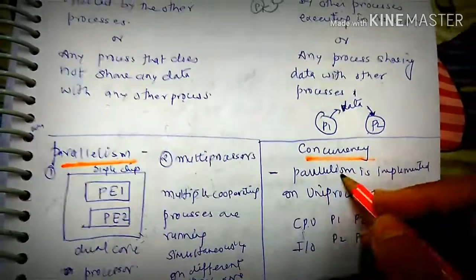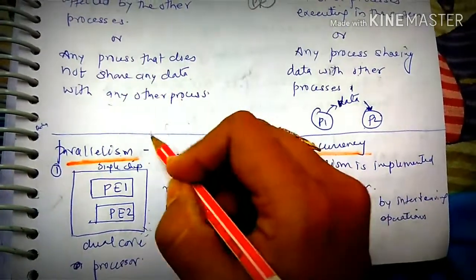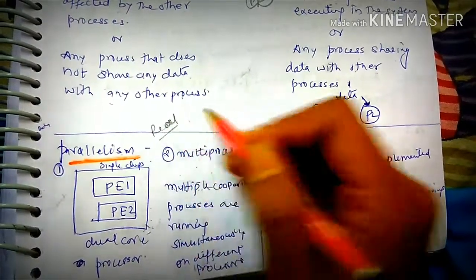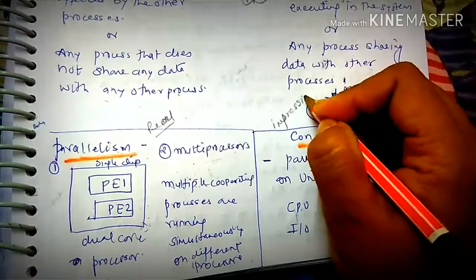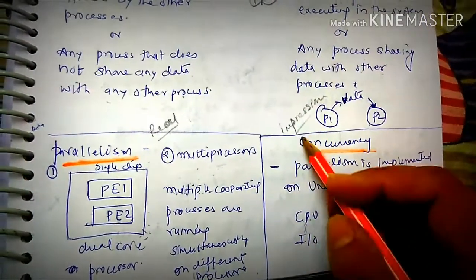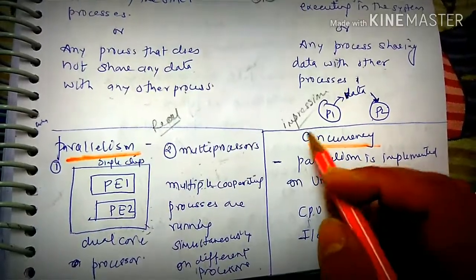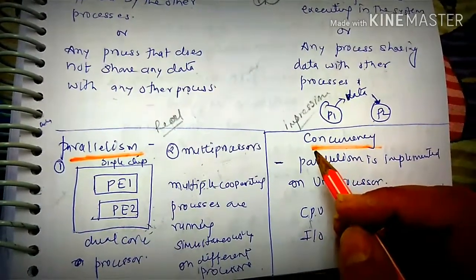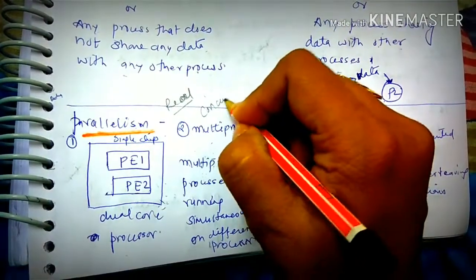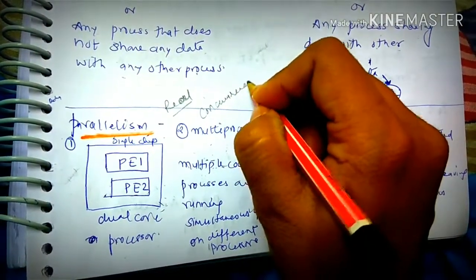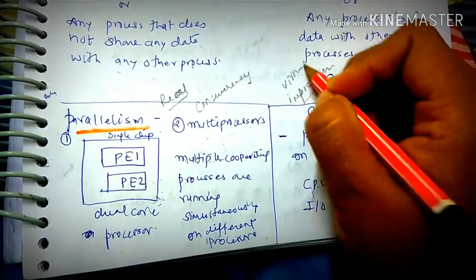Looking at the differences between parallelism and concurrency: in parallelism, processes are truly simultaneously executed — this is real concurrency. In contrast, concurrency on a single processor gives only an impression of simultaneity, so you can call it virtual concurrency.